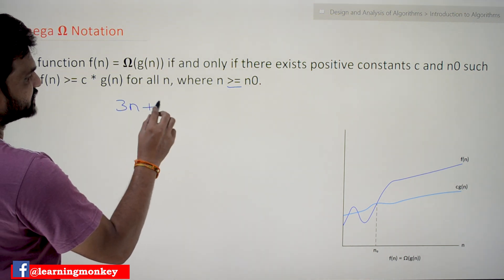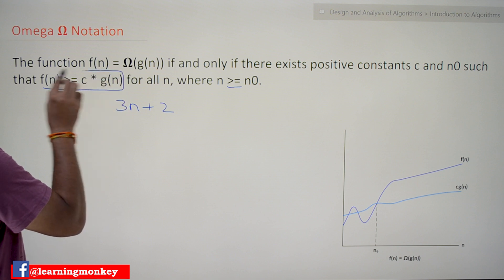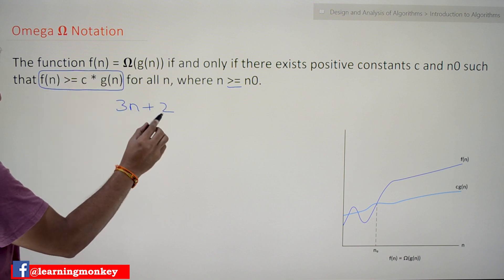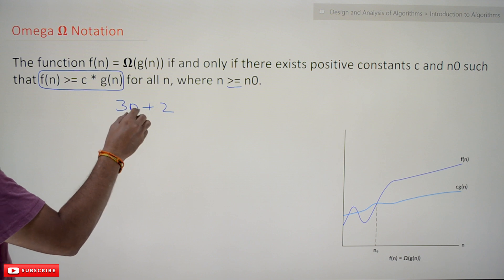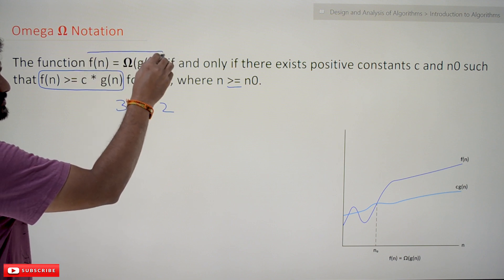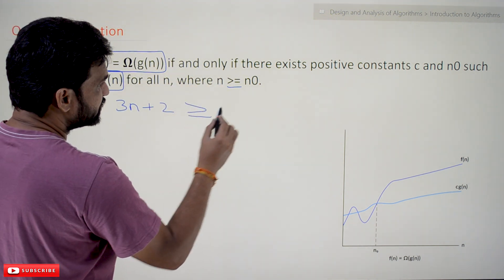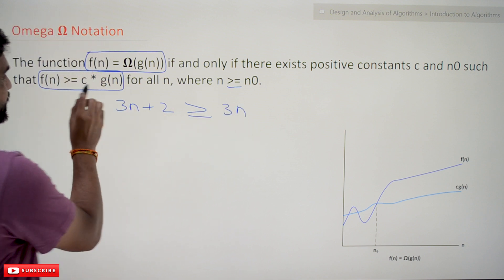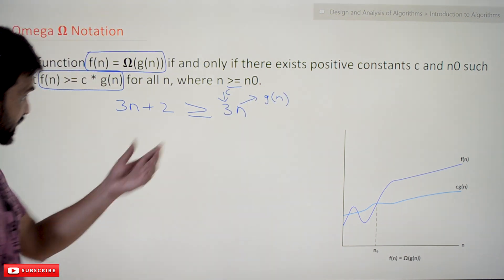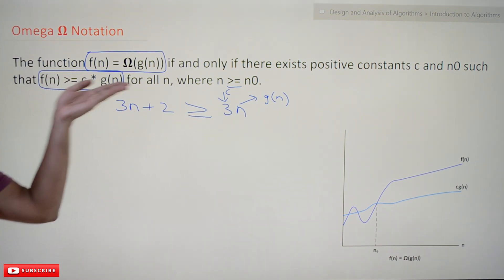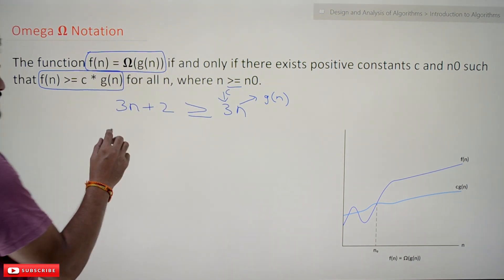We will consider the previous example, 3n plus 2. If this condition happens to be true for all values of n greater than or equal to n-naught, then this function can also be expressed using Omega of g of n. We are going to consider c times g of n, where c is the constant and g of n is the function. If this condition is true for all values of n greater than or equal to n-naught, then the notation holds.